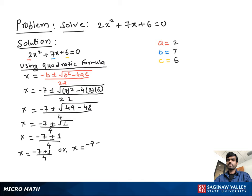Solving the first part: negative 7 plus 1 is negative 6, over 4, which simplifies to negative 3 over 2. Solving the second part: negative 7 minus 1 is negative 8, over 4, which is equal to negative 2. So x is equal to negative 3 over 2 or x is equal to negative 2.